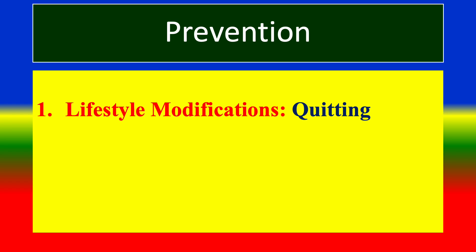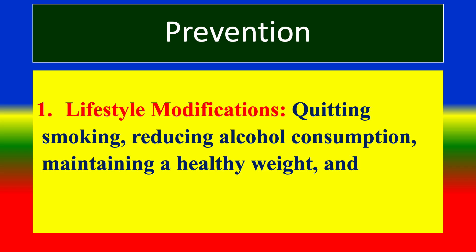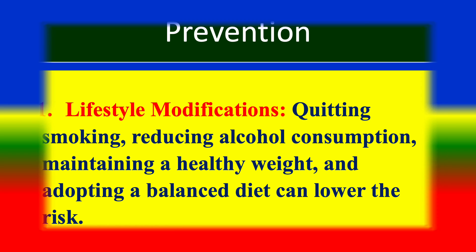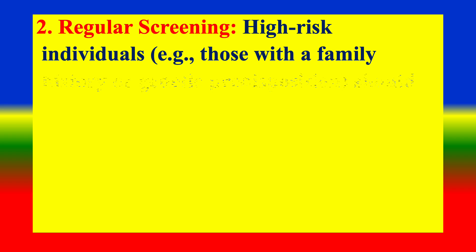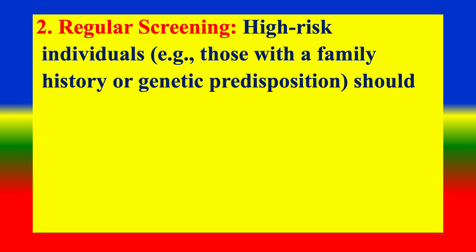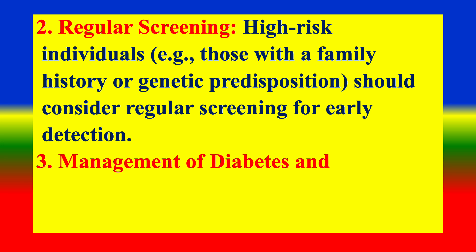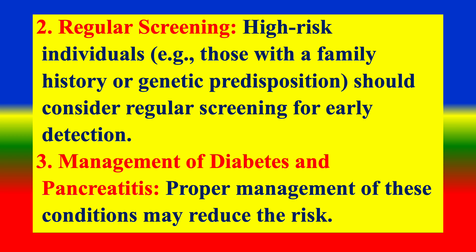Prevention strategies include lifestyle modifications such as quitting smoking, reducing alcohol consumption, maintaining a healthy weight, and adopting a balanced diet to lower risk. Regular screening is recommended for high-risk individuals — those with a family history or genetic predisposition — for early detection. Proper management of diabetes and pancreatitis may also reduce the risk.